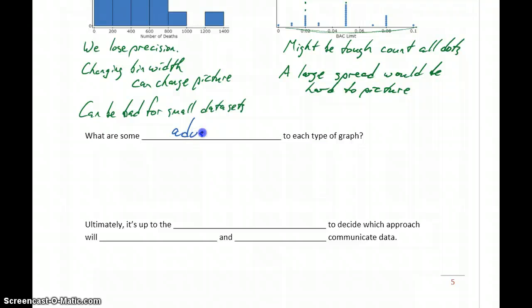So what are some of the advantages then to these types of graphs? Dot plots are good for precision because we retain the individual data values. We know that exactly one country had a value of 0.07. So we're not talking about ranges, we're talking about specific numbers. Good for precision with small data sets with limited spread.